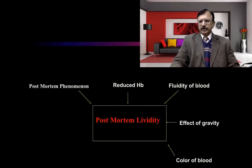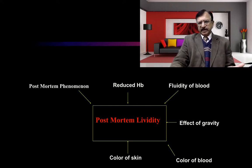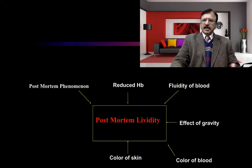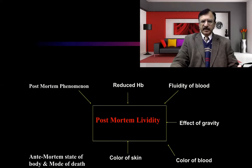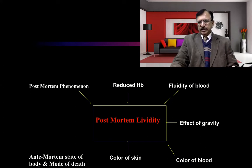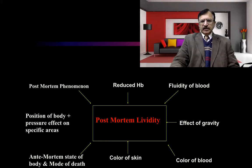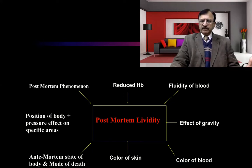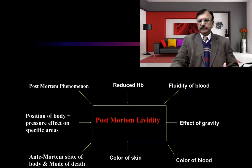The color will depend upon the cause of death, as well as the color of the skin — fair-colored skin manifests hypostasis easily, while dark-colored skin makes it difficult to see. The ante-mortem state of the body and mode of death also determine the color of the post-mortem staining. Furthermore, on areas under pressure from tight garments or protruding objects, hypostasis will not be present.